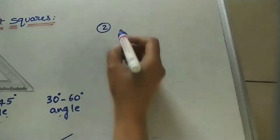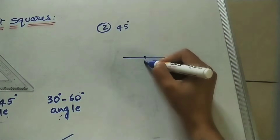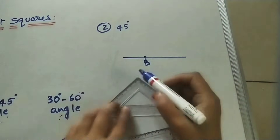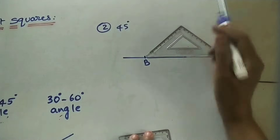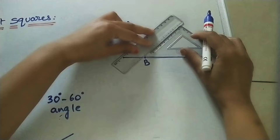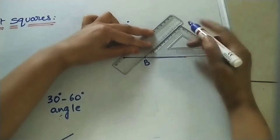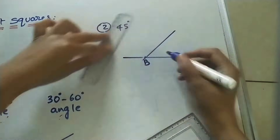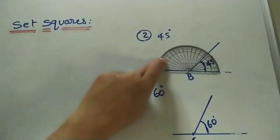Next, let us mark 45 degrees. Draw a horizontal line and assume we have to mark 45 degrees at point B using set squares. This set square has angles 90, 45, and 45 degrees. I am keeping this near B so this line coincides with the base side. Keep the scale on the slope, adjusted so it passes through B, with this side coinciding with the line. Remove it and join — this is a 45 degree line.